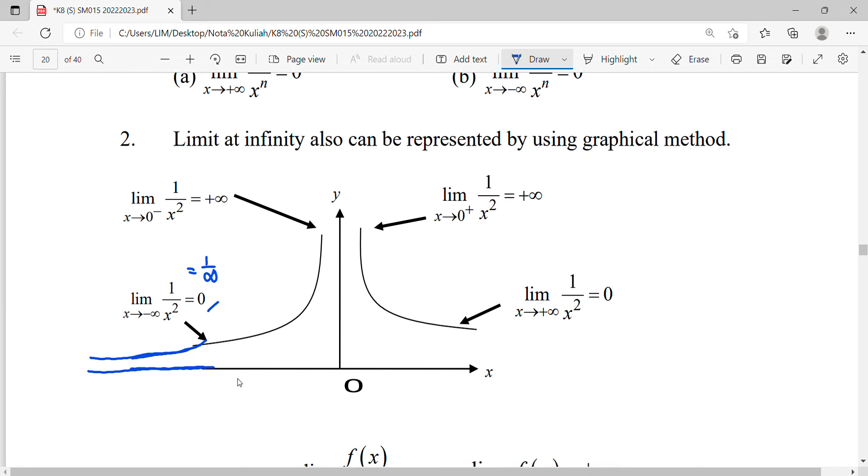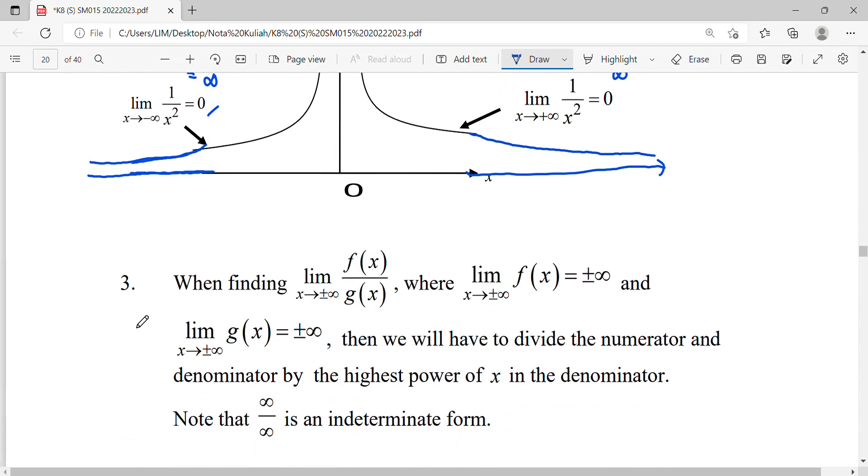When your limit is x approaches positive infinity, substituting gives one over infinity, which is zero. When x approaches positive infinity on the right side, your graph will approach zero. That's what limit at infinity means - to see the left and right ends, what values they approach.